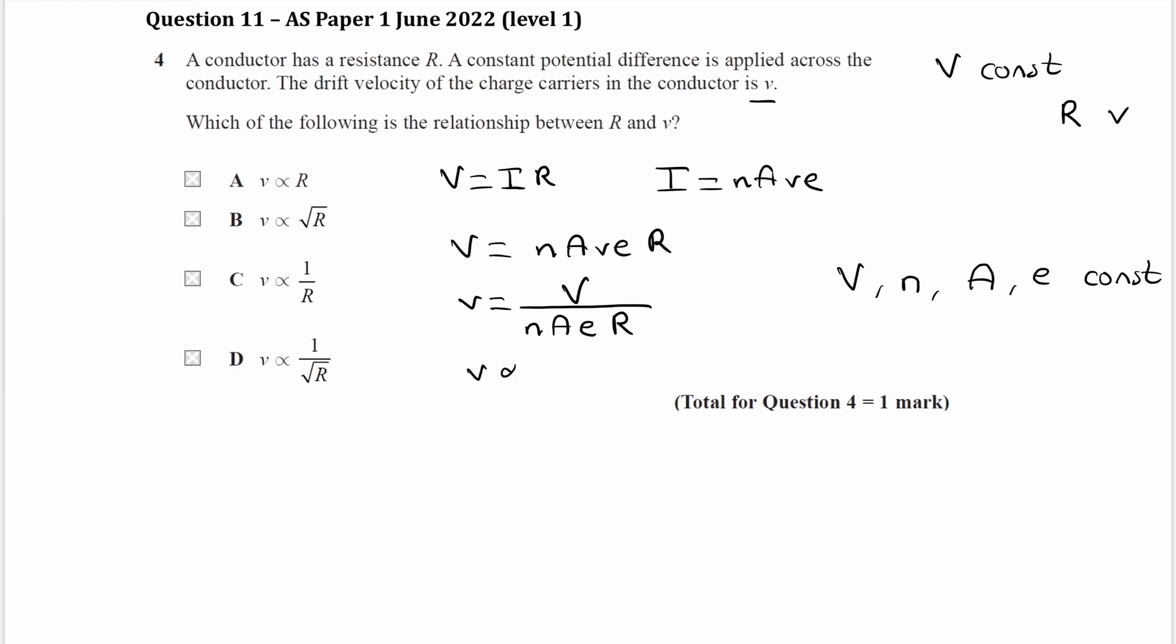And therefore we can say that v is proportional to 1 over R. So it is C.